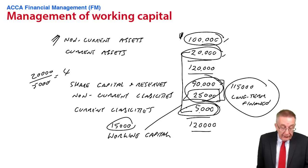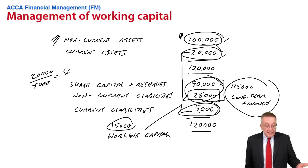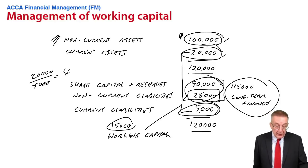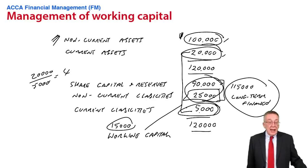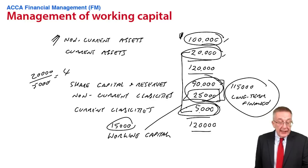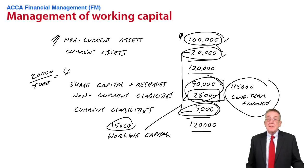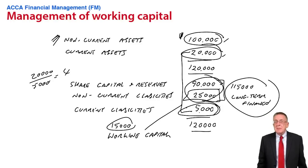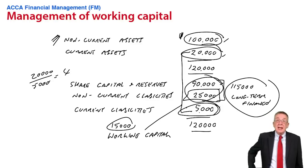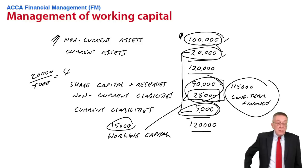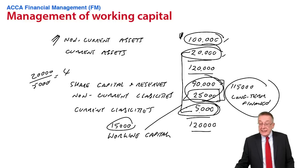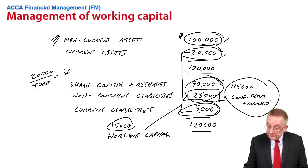The efficiency ratios — inventory turnover, receivables turnover, etc. — can be understood by looking at something examined in F9: the operating cycle.